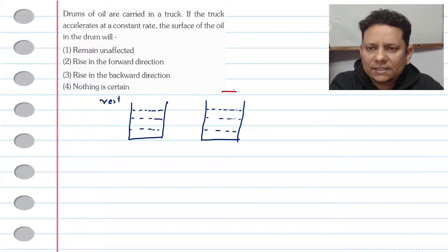So when you have acceleration, this is the new surface. This is the surface from fluid mechanics when we read it. Then we will calculate it, and here the value of tan theta is equal to a by g.